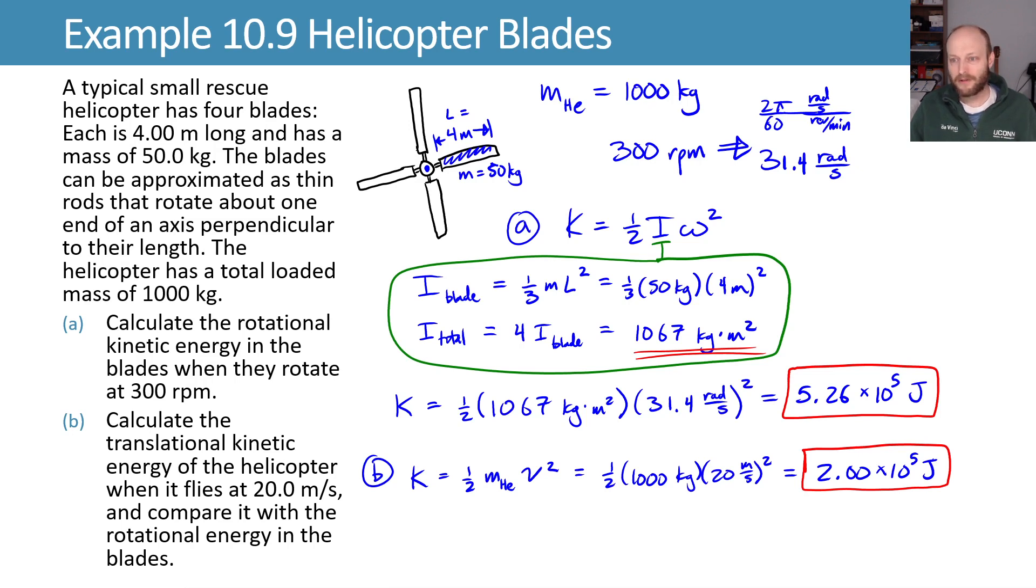Another way of comparing these two things is we can take a ratio and say, what's the ratio of my translational to my rotational? When we plug those in, we get a ratio that will be a little under one half, as we saw. So it's about 38% of the energy that's in the rotational blades is equal to the energy that we have in translation.